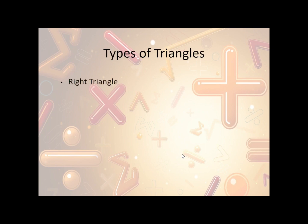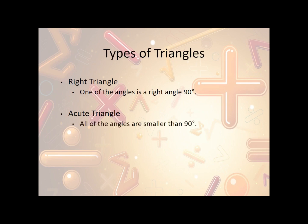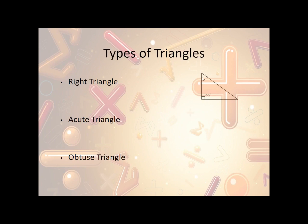Other types of triangles: we have right triangles, where one of the angles is a right angle or a 90 degree angle. Acute triangles have all angles smaller than 90 degrees. And an obtuse triangle has one of the angles bigger than 90. A right triangle has a 90 degree angle right here. An acute triangle has all the angles smaller than 90 — in this case they're all 60, but they don't have to all be the same, they just need to all be smaller than 90. And then obtuse has this big angle here that's bigger than 90.